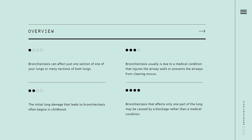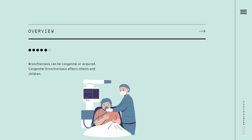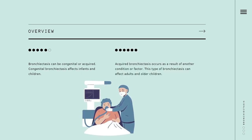Bronchiectasis that affects only one part of the lung may be caused by a blockage rather than a medical condition. Bronchiectasis can be congenital or acquired. Congenital bronchiectasis affects infants and children, while acquired bronchiectasis occurs as a result of another condition or factor. This type can affect adults and older children.